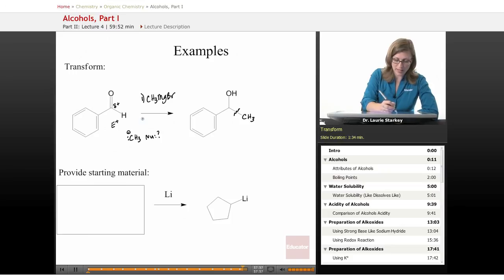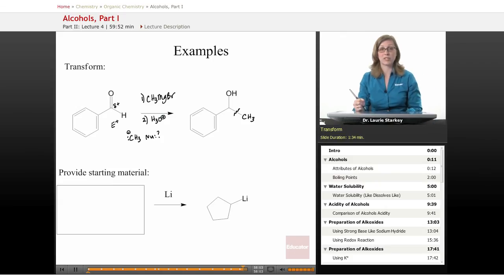We would do that as step one and as step two after doing the Grignard, we would need some kind of aqueous workup, H3O+ for example, and that would protonate the O- to give an alcohol product.